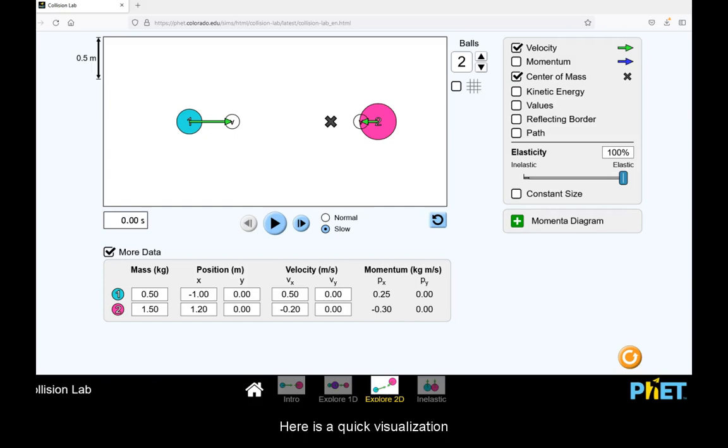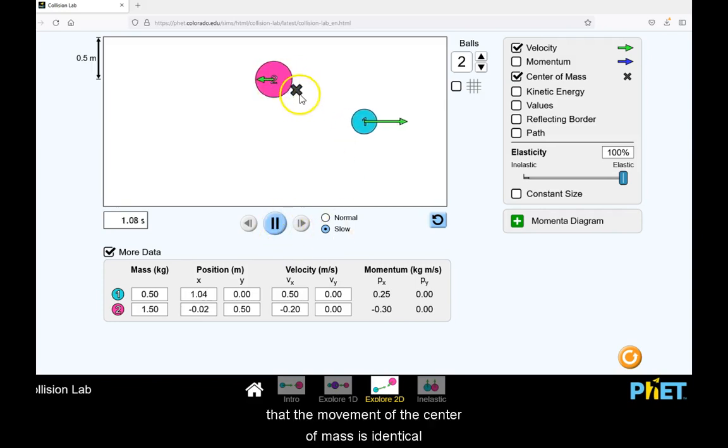Here is a quick visualization of the movement of center of mass from phet.colorado.edu. Note that while the instantaneous position of the center of mass depends on the instantaneous position of the objects of the system, the movement of the center of mass only depends on the masses and velocity vectors. Observe that the movement of the center of mass is identical in both of these scenarios.